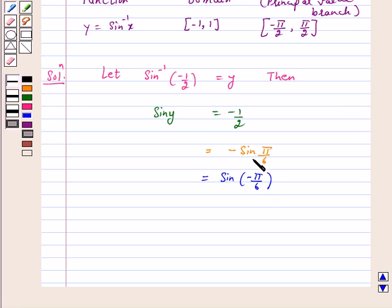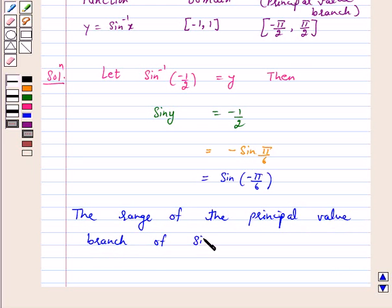Now the range of the principal value branch of sine inverse is closed interval minus pi by 2 to pi by 2, and sine of minus pi by 6 equals minus 1 by 2.